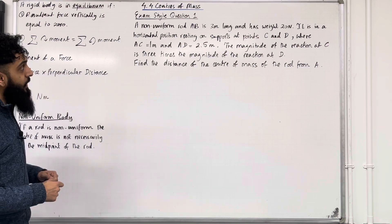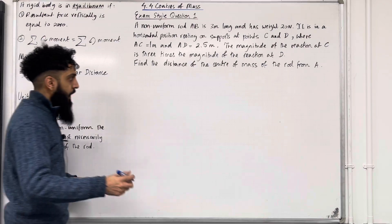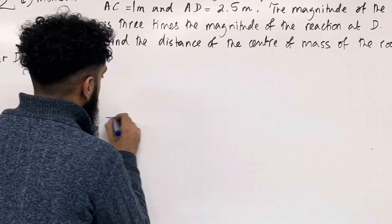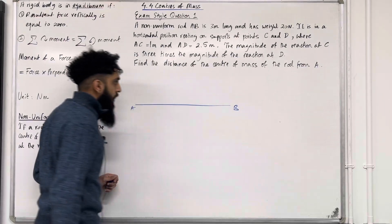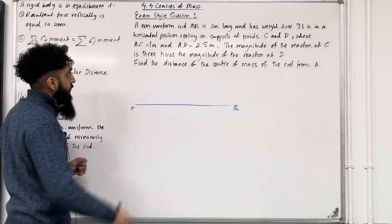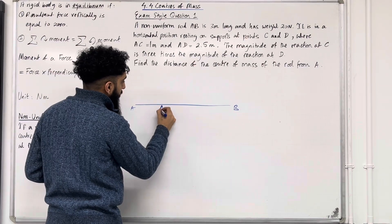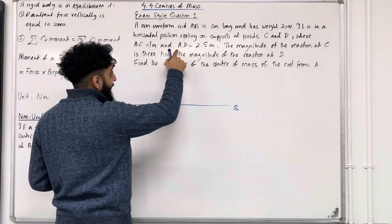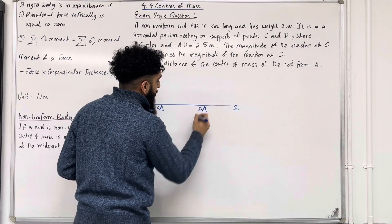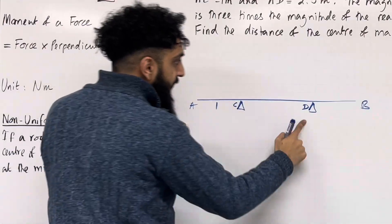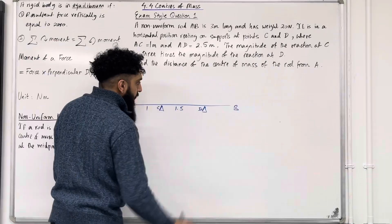I'm going to start by drawing the non-uniform rod AB, labelling all the forces acting on the rod. It is resting on two supports positioned at C and D. The distance A to C is 1 metre, so C will be somewhere over here — that is 1 metre. The distance A to D is 2.5 metres, so D will be somewhere over here. 2.5 take away 1 gives us this gap, which is 1.5 metres.